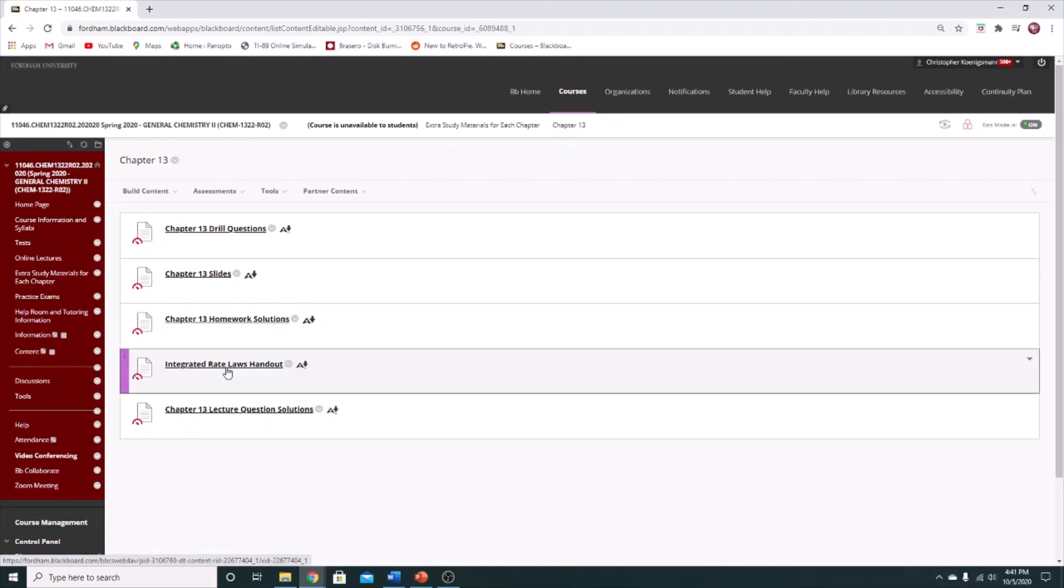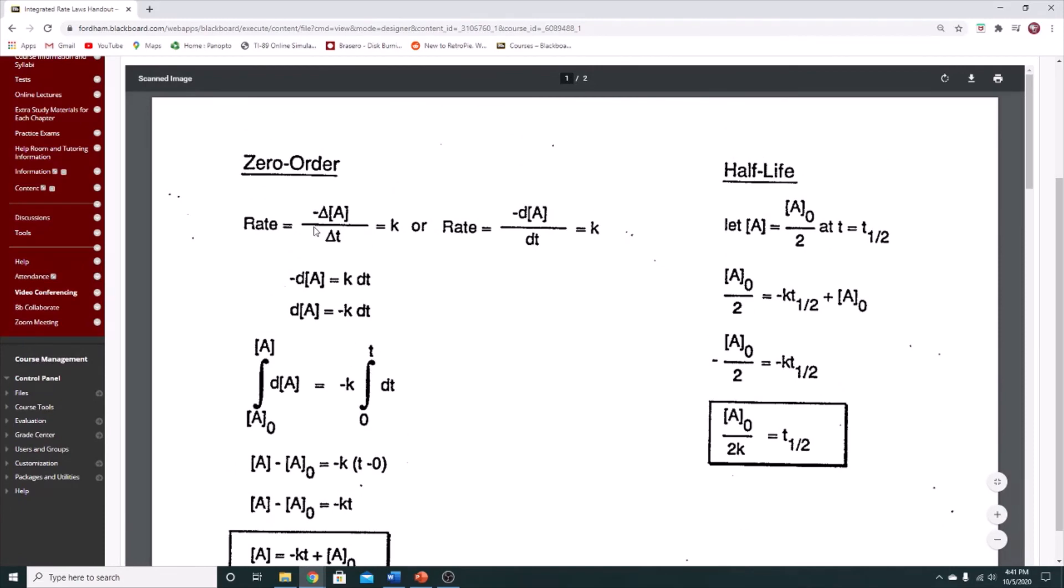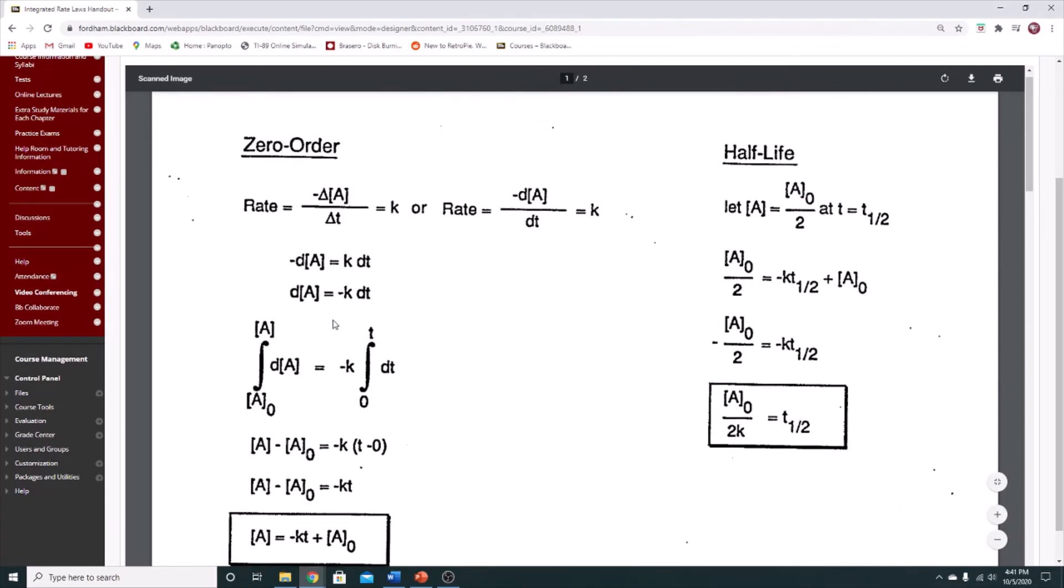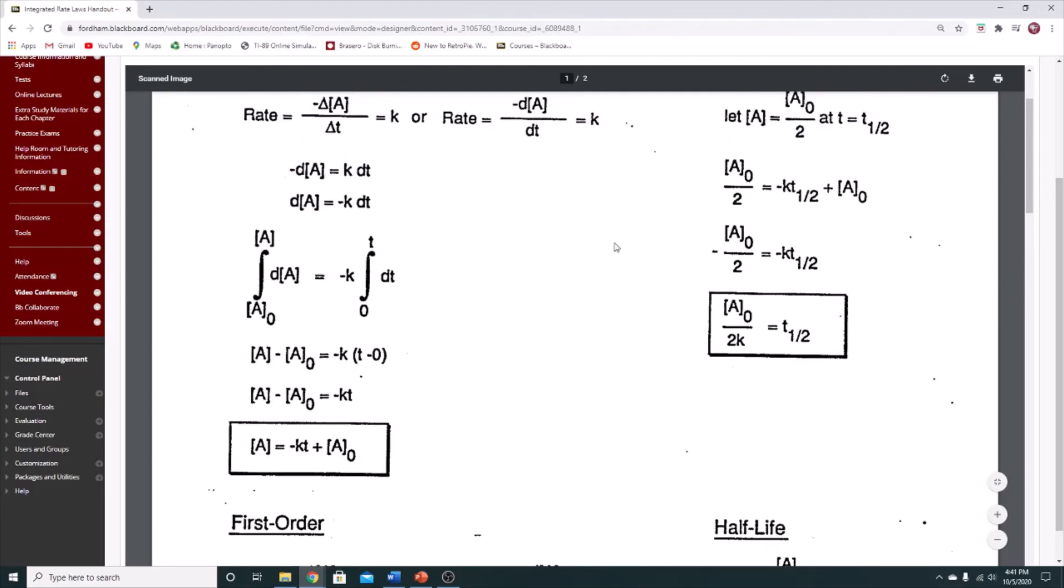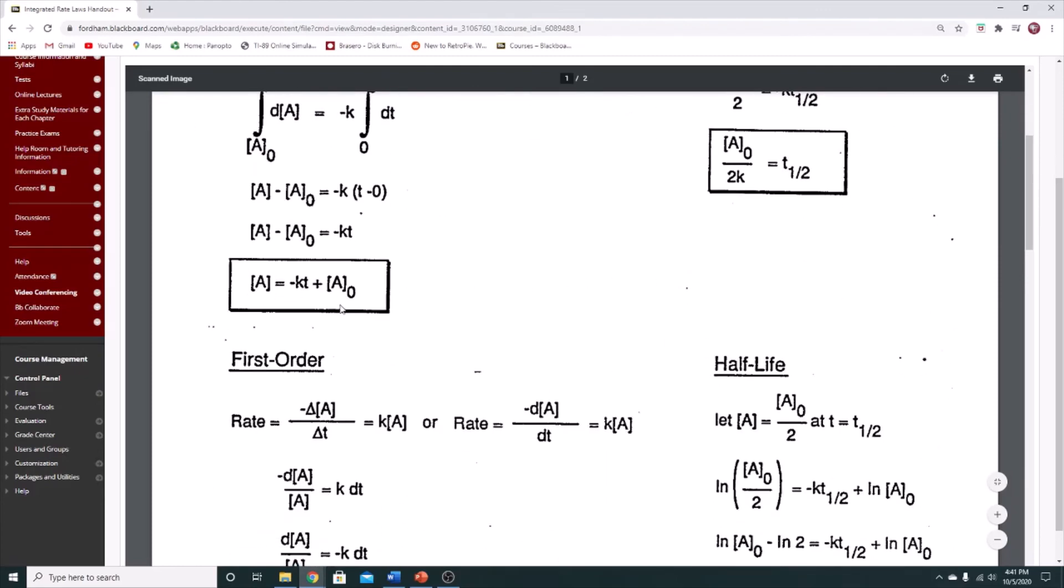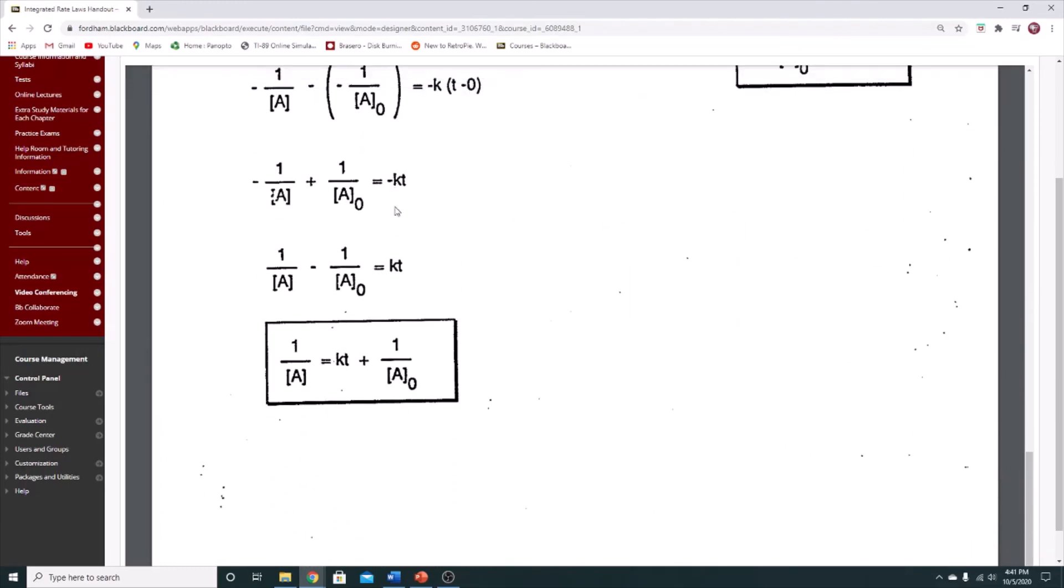The biggest one for this chapter is the integrated rate laws handout. This handout goes through and shows you all of the different rate laws and how you derive them. Now you don't need to know the derivations, but you do need to know the solutions. This provides you with a summary of the solution for the integrated rate law and the half-life solution for zero, first, and second order rate laws.